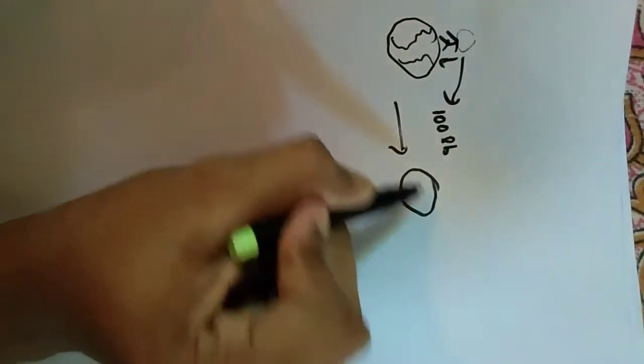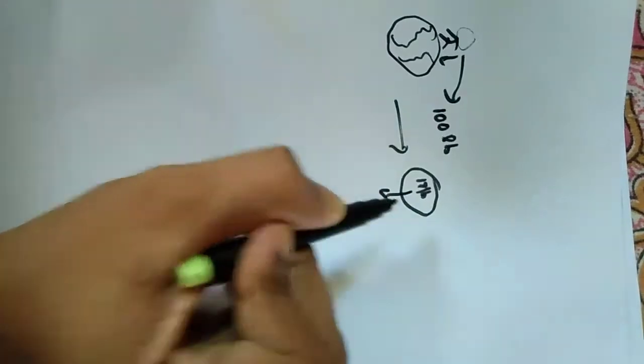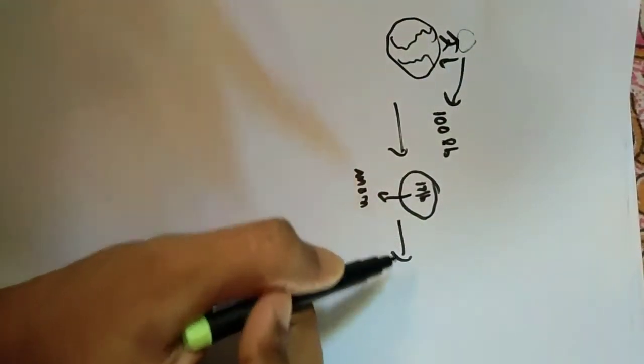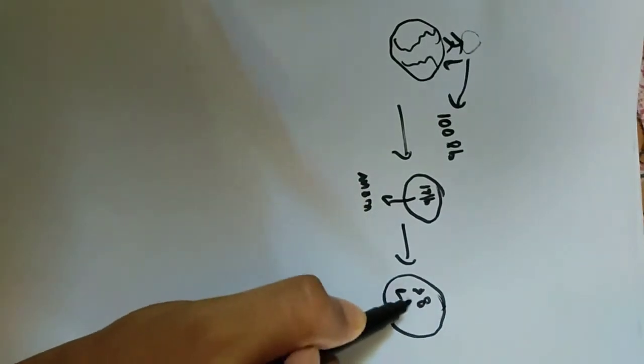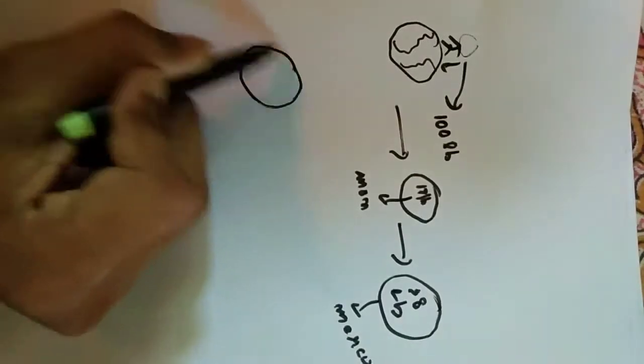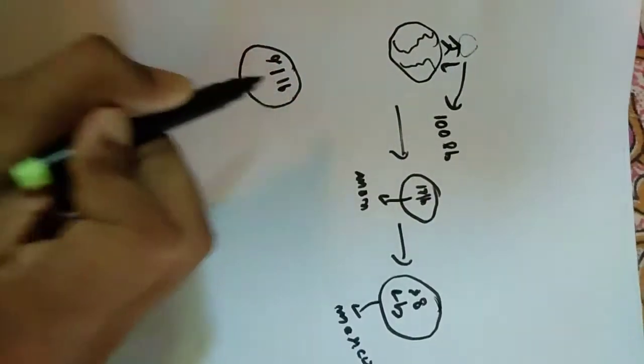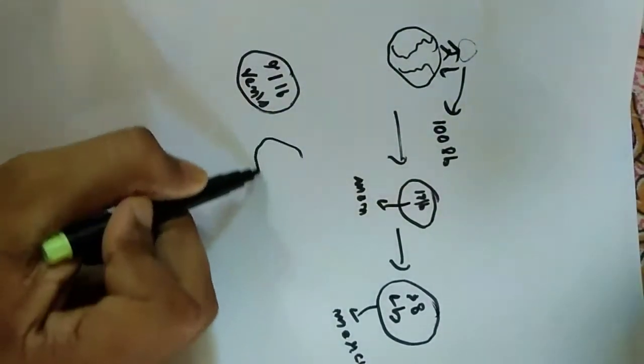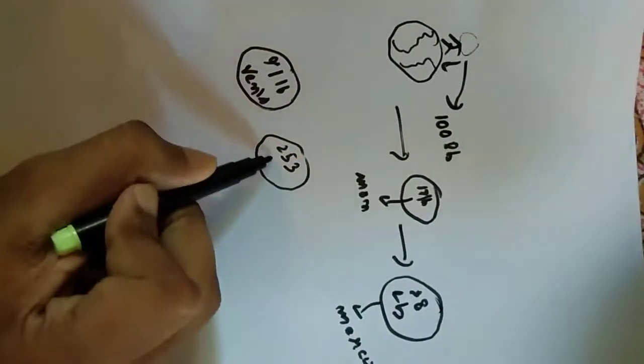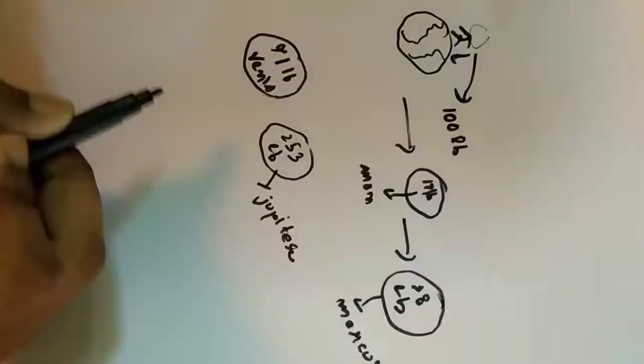If you were on a planet with less mass than Earth, you would weigh less than you do here. If you weighed 100 pounds on Earth, you would weigh 17 pounds on the moon, 38 on Mercury, and 253 on Jupiter, and so on.